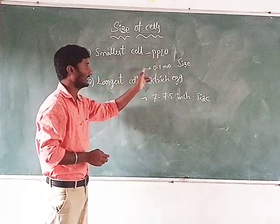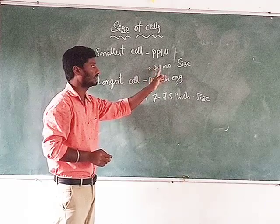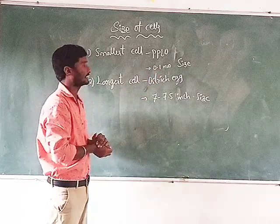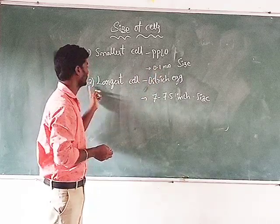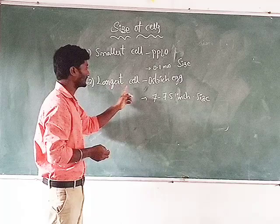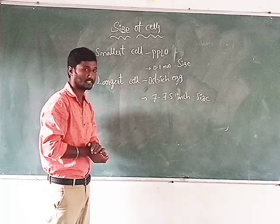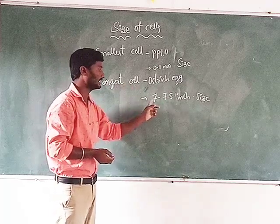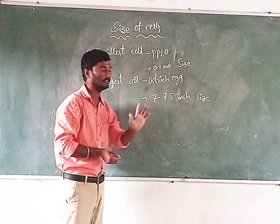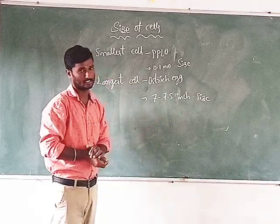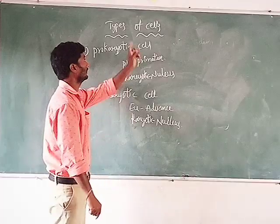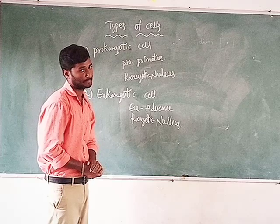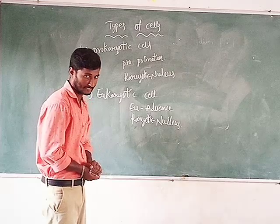The largest cell example is the ostrich egg. The ostrich egg is one of the largest cells. The size of the ostrich egg is nearly 7 to 7.5 inches. So, the smallest cell is PPLO/Mycoplasma at 0.1 micrometer, and the largest cell is the ostrich egg at nearly 7 to 7.5 inches.